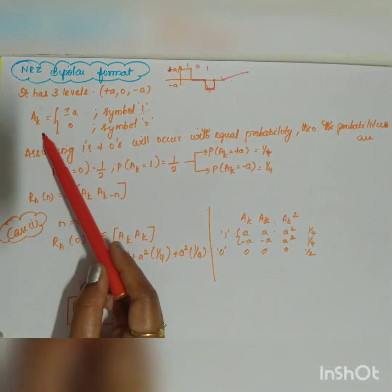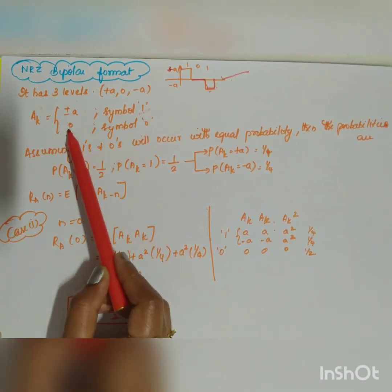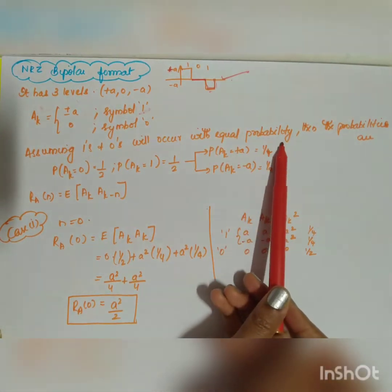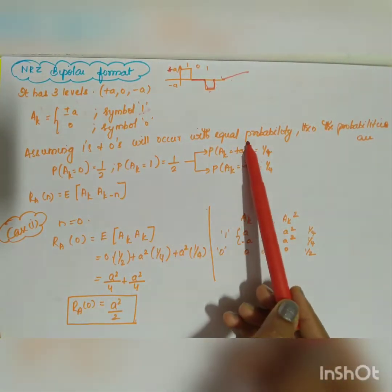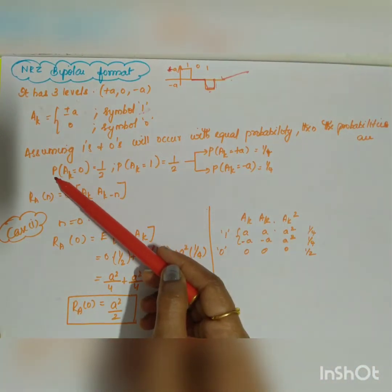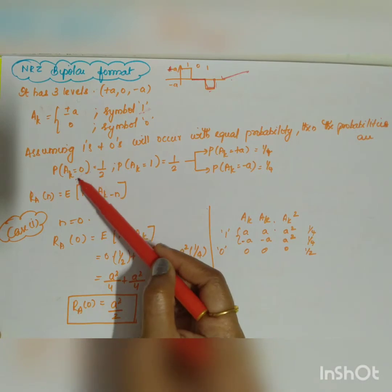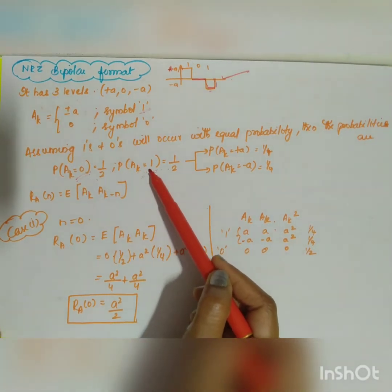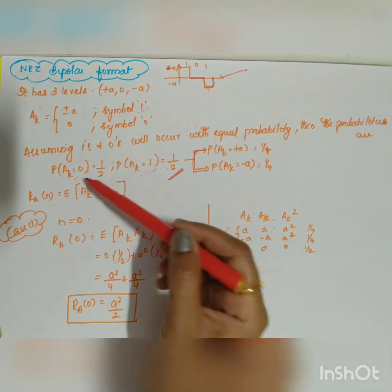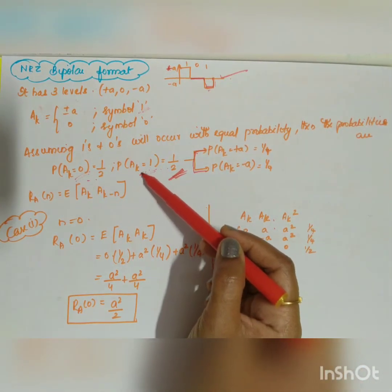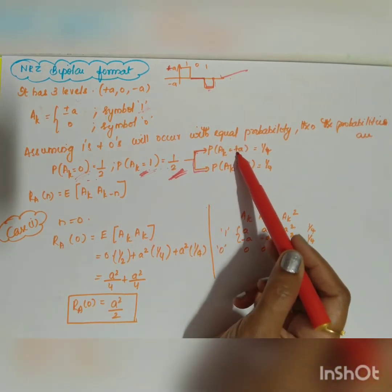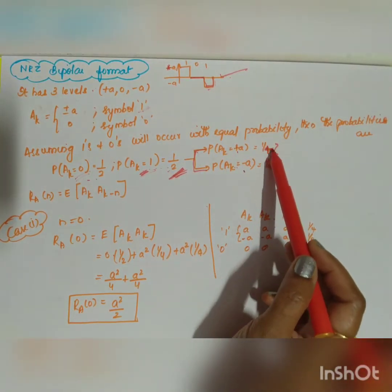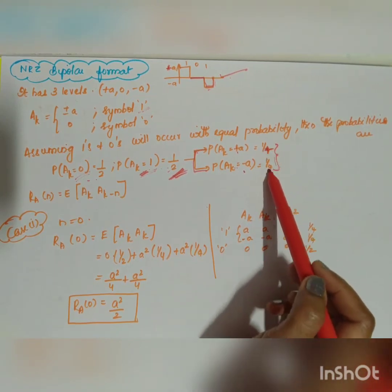Bipolar NRZ has three levels. We can write: a_k equals plus or minus A for symbol one, and zero for symbol zero. Assuming ones and zeros occur with equal probability, the probability P(a_k = 0) = 1/2. For symbol one, P = 1/2, but since it can take +A or -A with equal probability, P(a_k = +A) = 1/4 and P(a_k = -A) = 1/4.